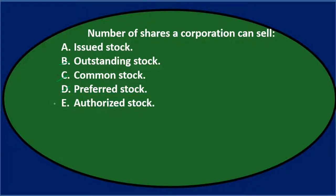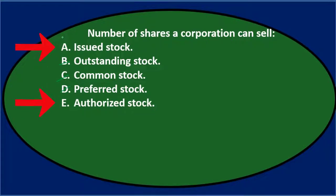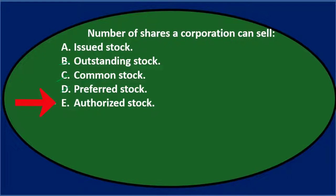Option E — authorized stock — sounds like a legal term that could give authorization for the issuance of stock. We're left with A and E. Issued stock means shares already sold or issued, whereas authorized stock is what we could issue or sell — the legal right to have shares outstanding. Therefore, the correct answer is E, authorized stock.